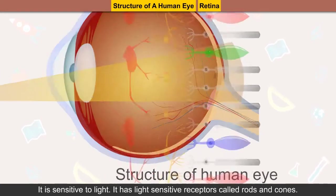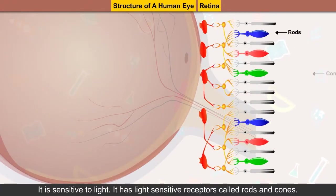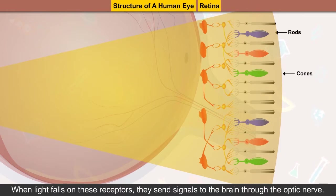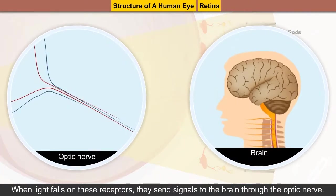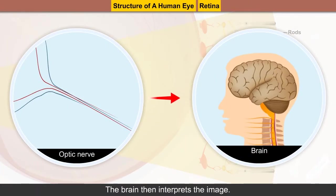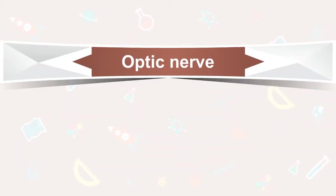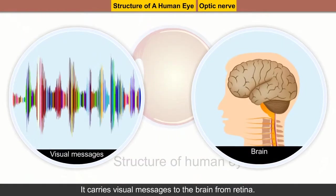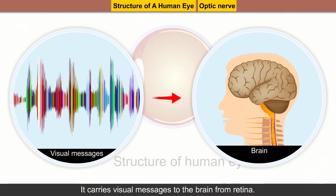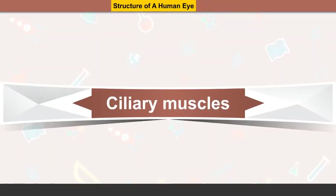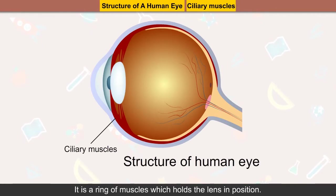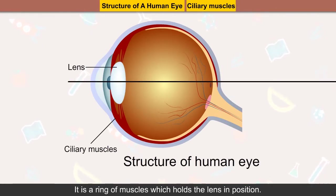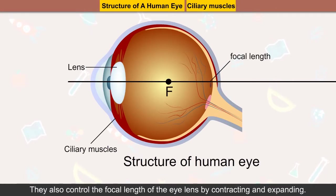The retina has light-sensitive receptors called rods and cones. When light falls on these receptors, they send signals to the brain through the optic nerve, which then interprets the image. Optic nerve: it is a bundle of nerves beginning from the brain and entering the eyeball from behind, carrying visual messages to the brain from the retina.